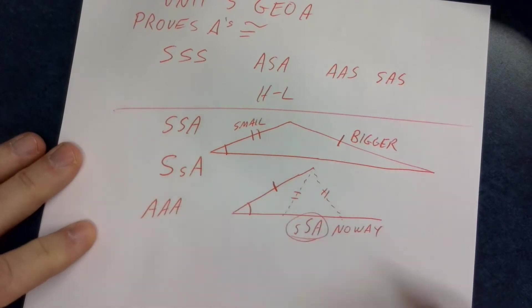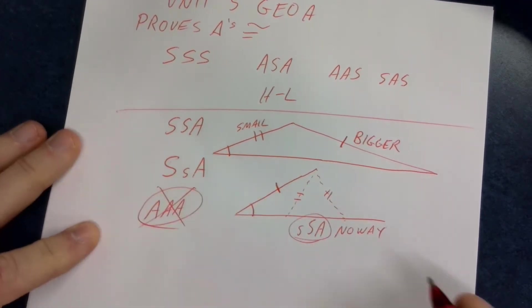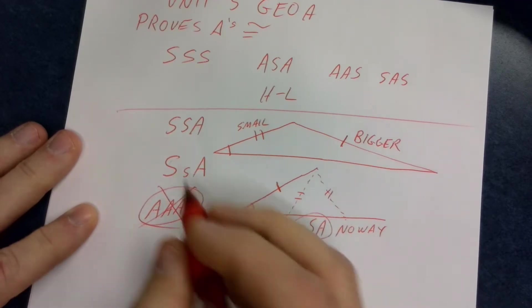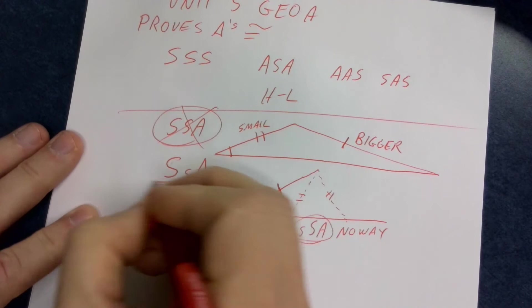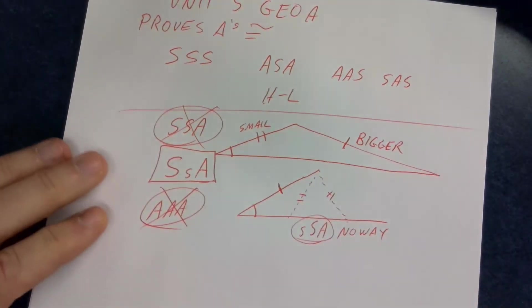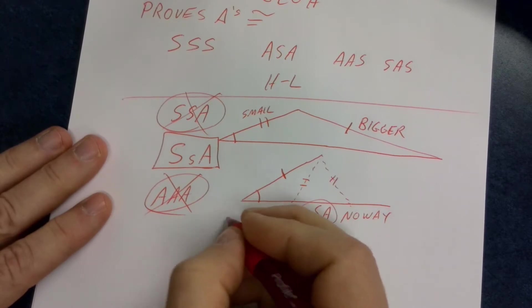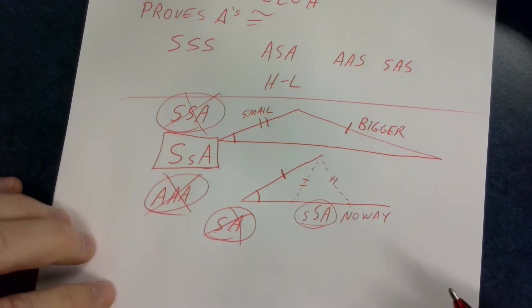AAA, nope, that doesn't work. Again, little S, big S, A, so just general SSA doesn't work. It has to be this for it to work. And then just if I have an S and an A, nope, that's not enough. You got to have three other things.